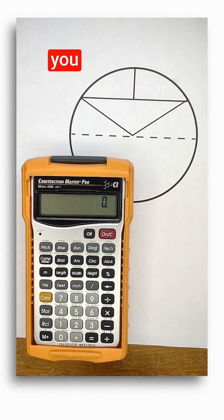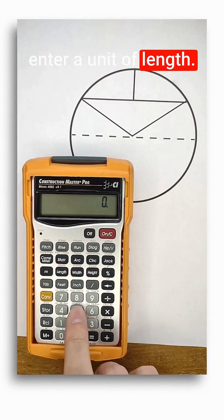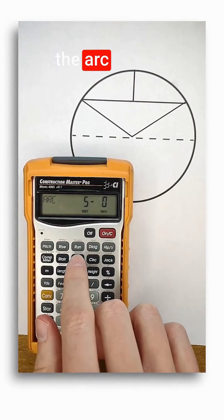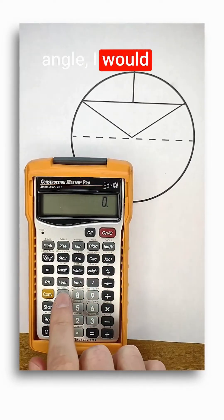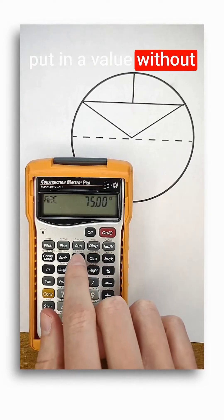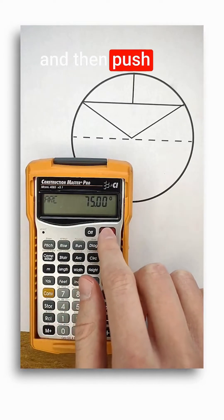For the arc length, you just have to enter a unit of length. Here I'll do five feet and then push the arc button. If instead I wanted to enter the arc's angle, I would just put in a value without a unit of length and then push arc.